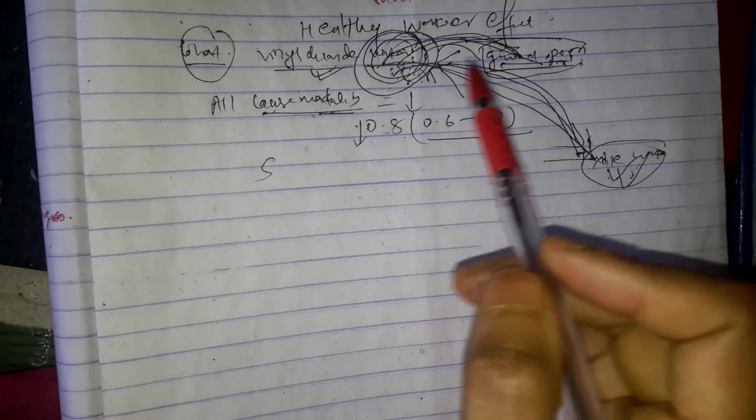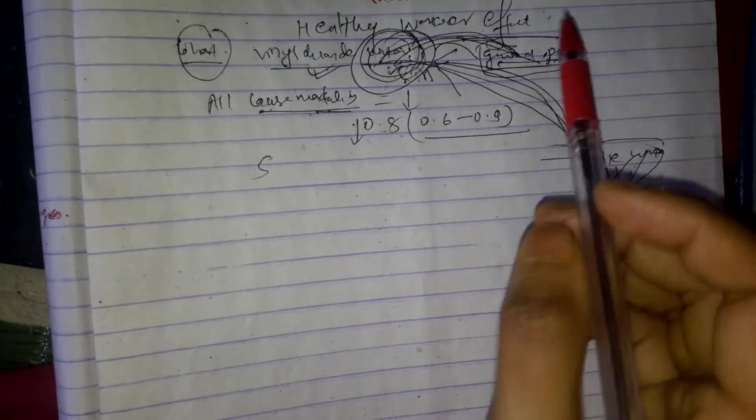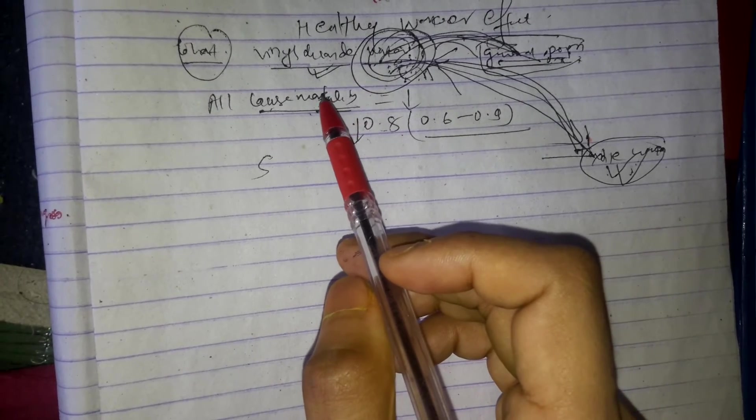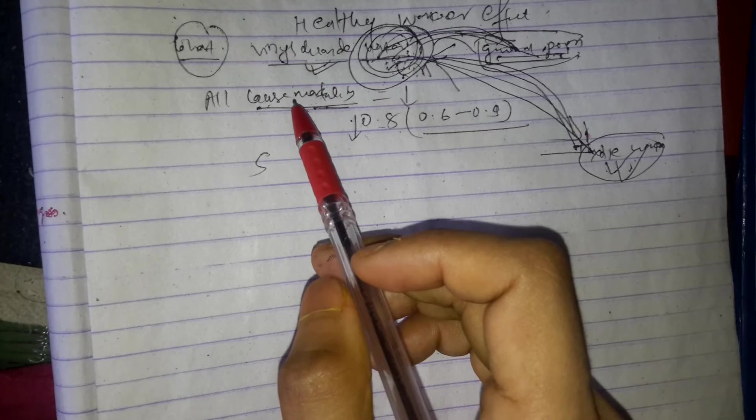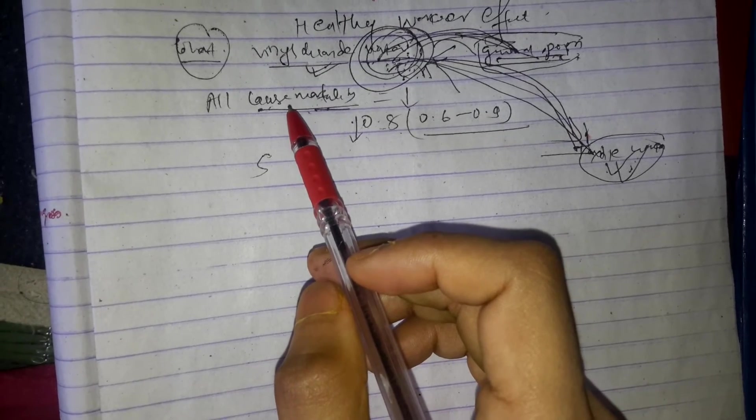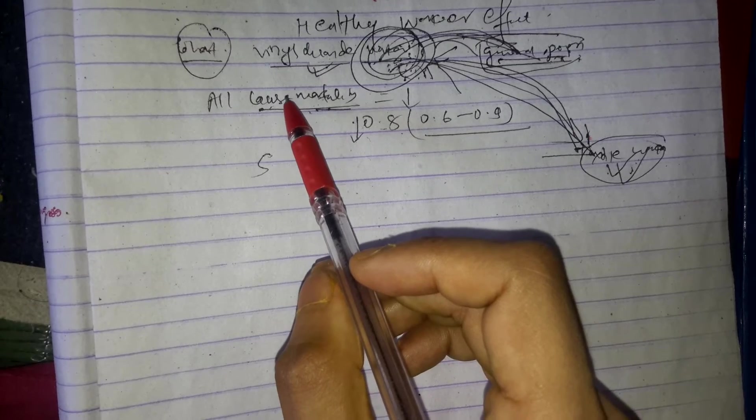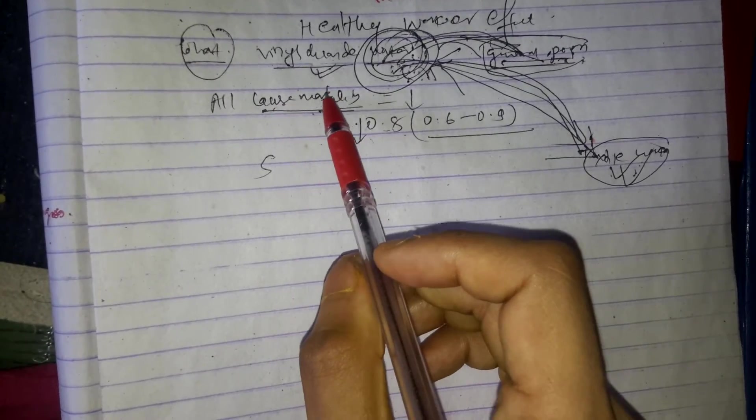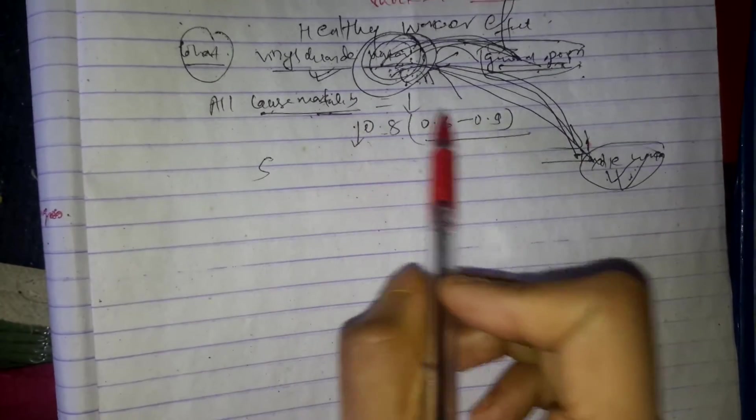This occurs in occupational cohort studies when general population is used as a reference group. The general population consists of healthy and unhealthy individuals. Those who are unhealthy are less likely to be employed whereas the employed workforce tends to have fewer sick individuals. Consequently, comparison of mortality rates between employed population and the general population are usually biased.